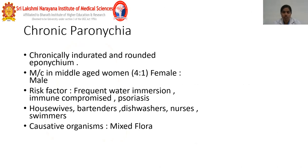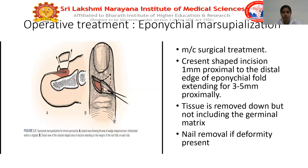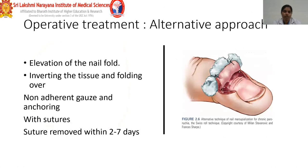The causative organism is usually mixed flora. Management of chronic paronychia is epinychial marsupialisation. A crescent-shaped incision is made 1 mm proximal to the distal edge of the epinychial fold, extending 3 to 5 mm proximally. Tissue is removed down to but not including the germinal matrix. Nail removal is done if deformity is present. The Swiss roll technique is an alternative — it consists of elevation of the nail fold, inverting the tissue, folding over non-adherent gauze, and anchoring with sutures removed within 2 to 7 days. Most commonly performed is marsupialisation.